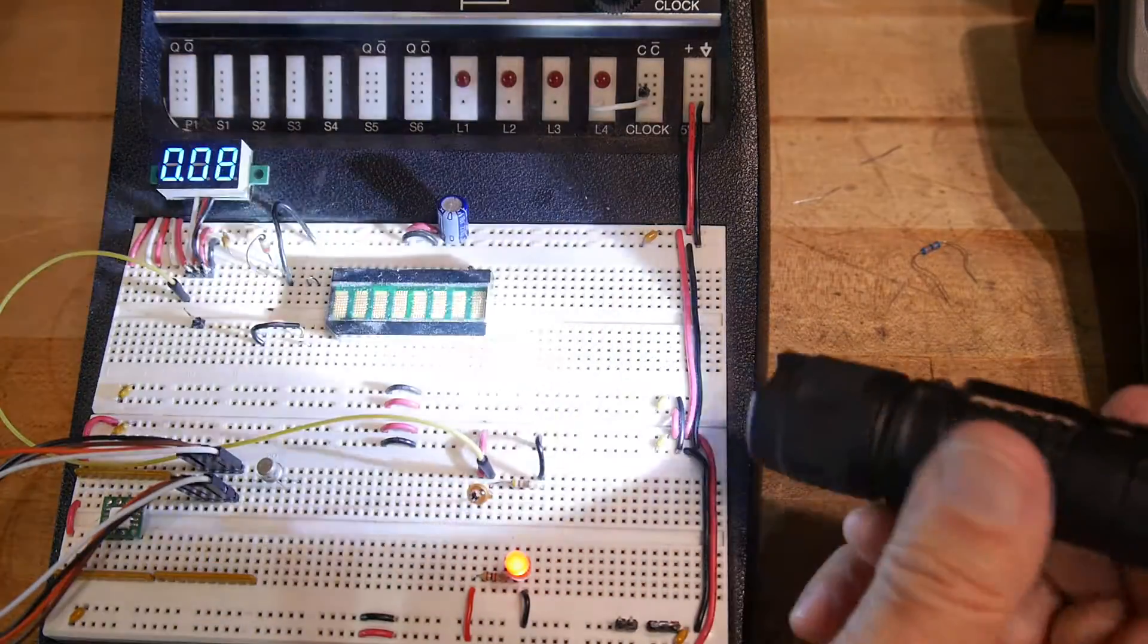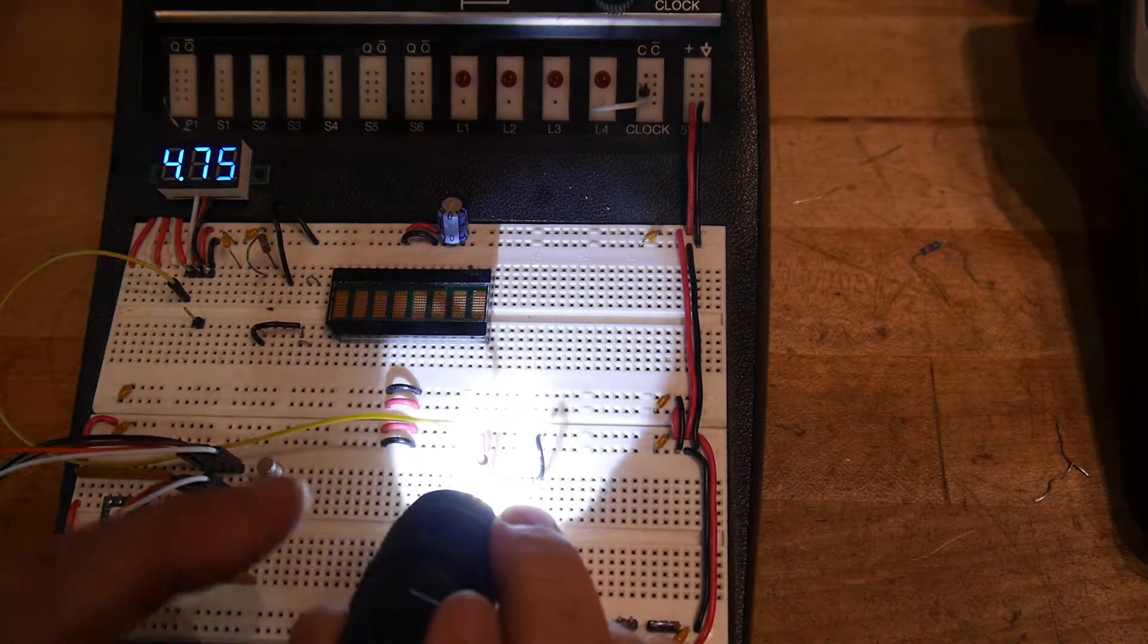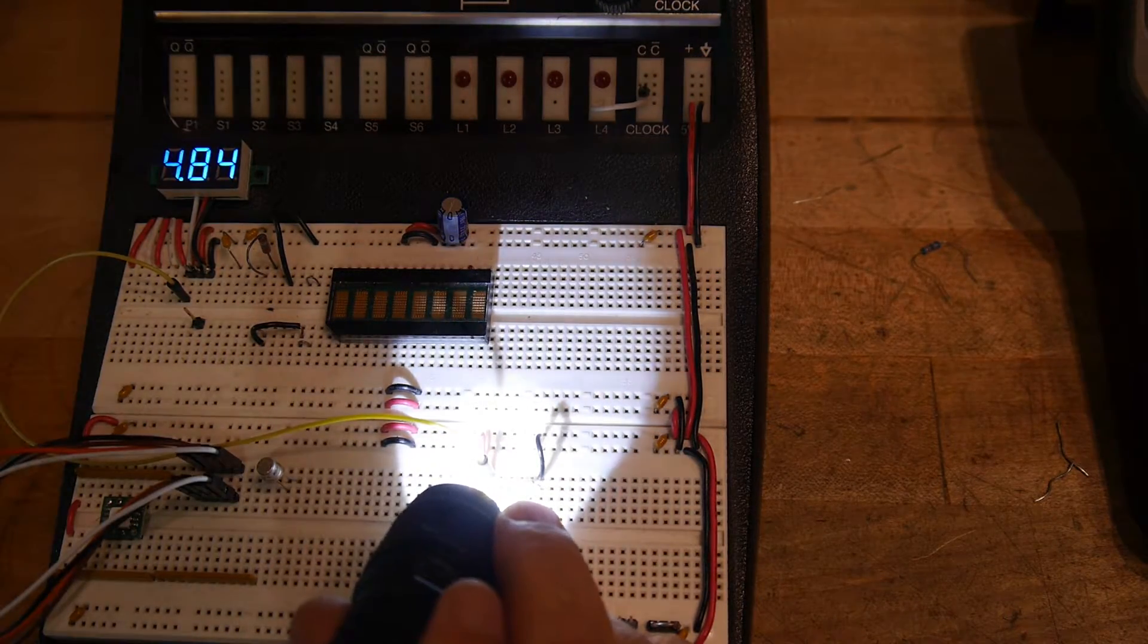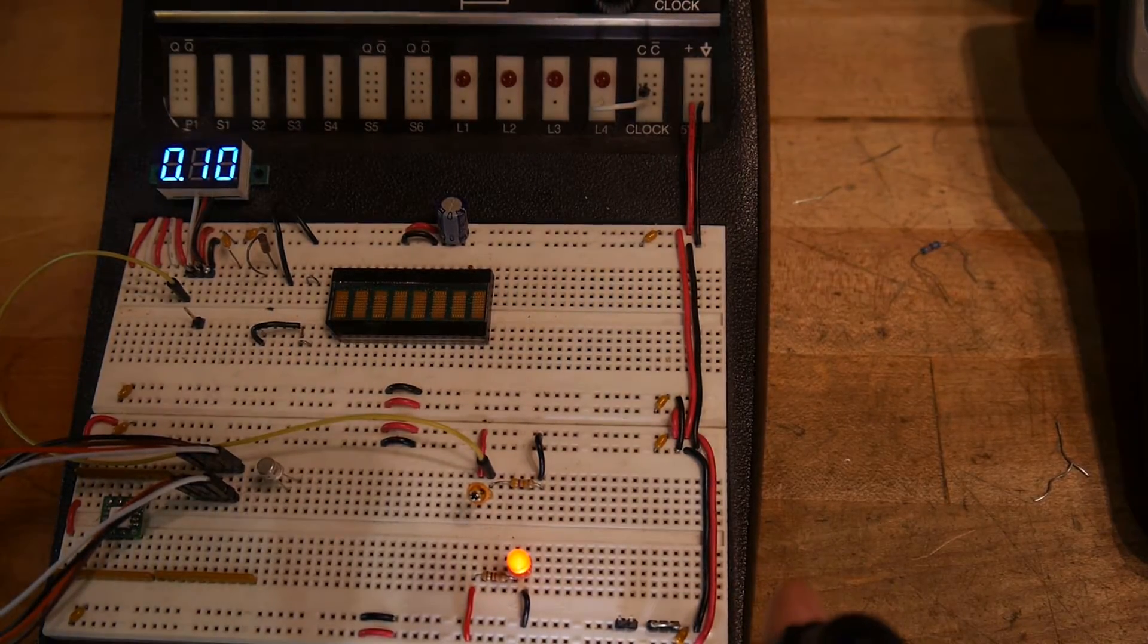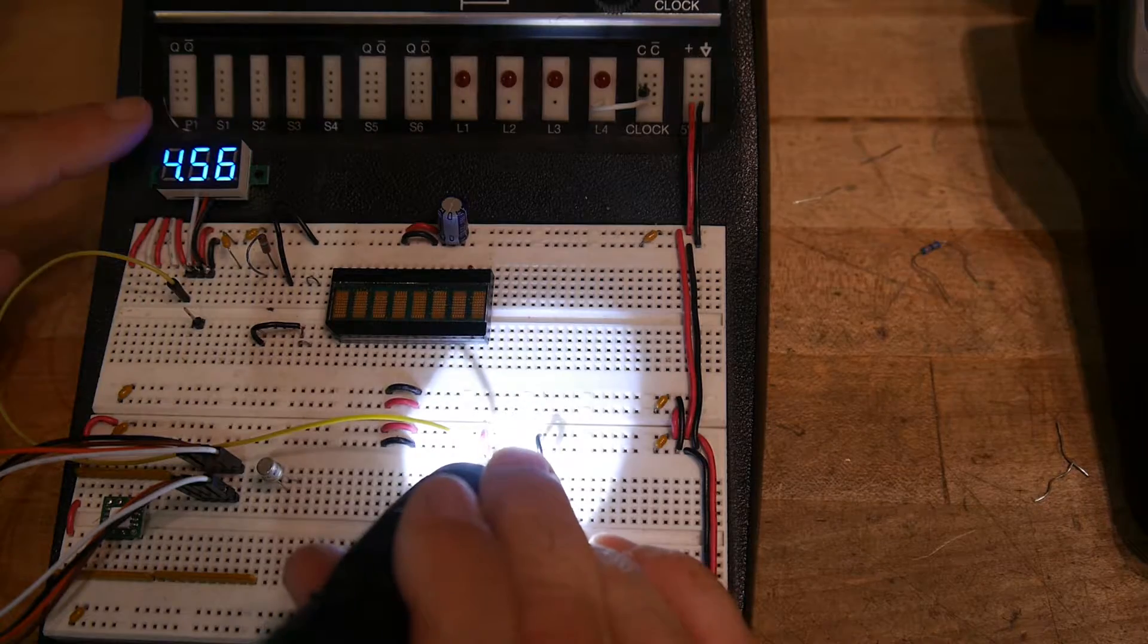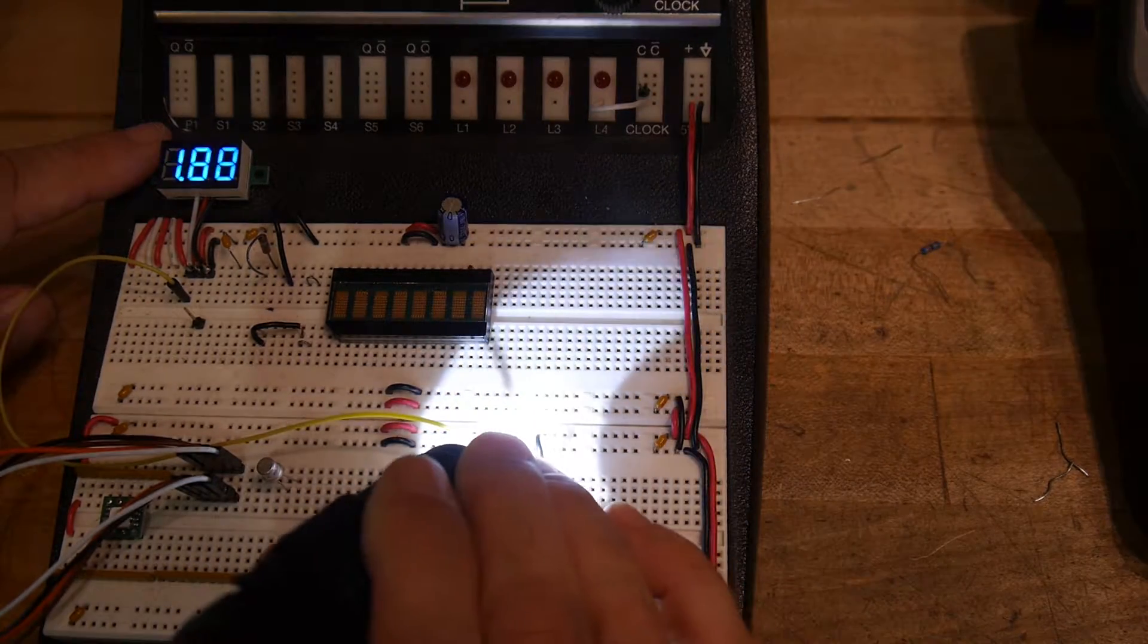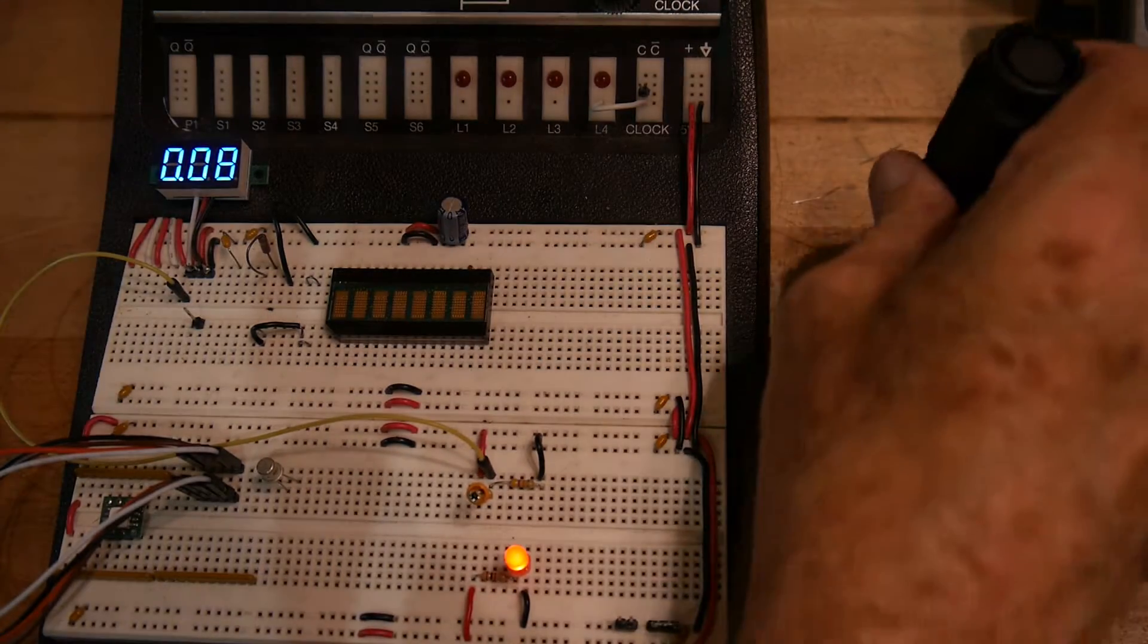We bring in a flashlight and we shine it on the photodiode. You can see that our, maybe you can't see that. Yes, you can. We can see that the voltage can go up to the rail, depending on how much photocurrent we introduce to the device.